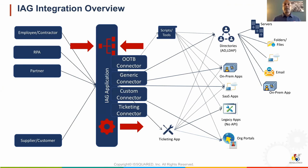What about those applications that don't have any user management APIs? This is usually the case with old legacy applications. You can still manage these applications within your IAG platform via integration with your ticketing tool. In this case, the IAG application converts the access request into a ticket assigned to the administration team for the application, and the provisioning is manually done by the administrators. Even though it is still a manual process, it is managed within your centralized IAG application. There are also cases where some provisioning steps cannot be automated — for such use cases, there are plugins that can call external scripts or tools.